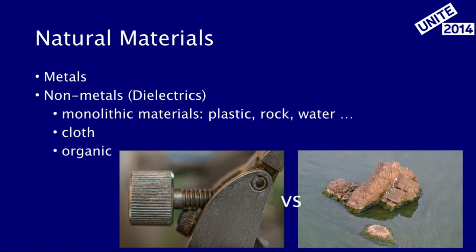We can subdivide all the materials around us into two very rough and large groups, which are very distinctive from each other: metals and everything else — essentially dielectrics. Plastic, rock, water — it's all dielectrics. They're called dielectrics because electricity doesn't pass through them well, unlike metals. There are also more complicated dielectrics like cloth and organic materials. The main complexity there is they are usually made out of multiple layers of intertwined fibers, which gives the material a distinctive look.